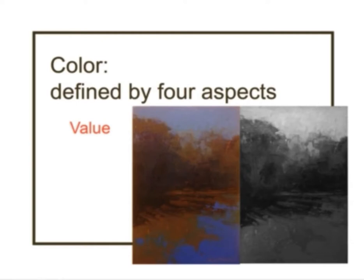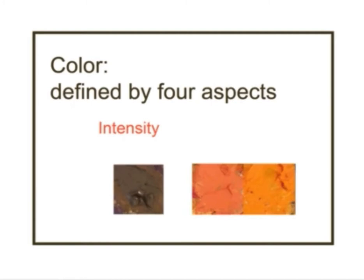Value is the lightness or darkness of a color — it's what you see when you remove the chroma from a painting. The painting on the left has the full chroma, intensity, and temperature of the actual painting. On the right you can see a grayscale version where all you can recognize are the values, running from the darkest darks to the lightest lights. That gives you a full sense of depth even without the rest of the aspects of color.